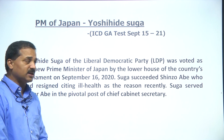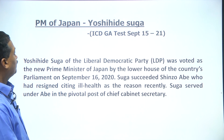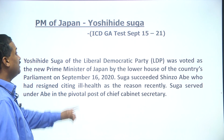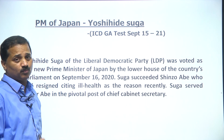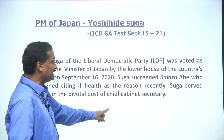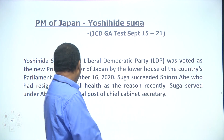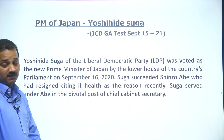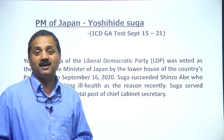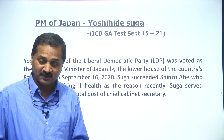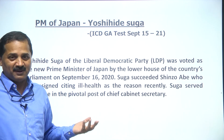Prime Minister of Japan — there was a change in government in Japan. It is Yoshihide Suga of the Liberal Democratic Party, who was voted the new Prime Minister of Japan. This was the exact text I gave in my notes. Suga succeeded Shinzo Abe, who had resigned citing ill health.